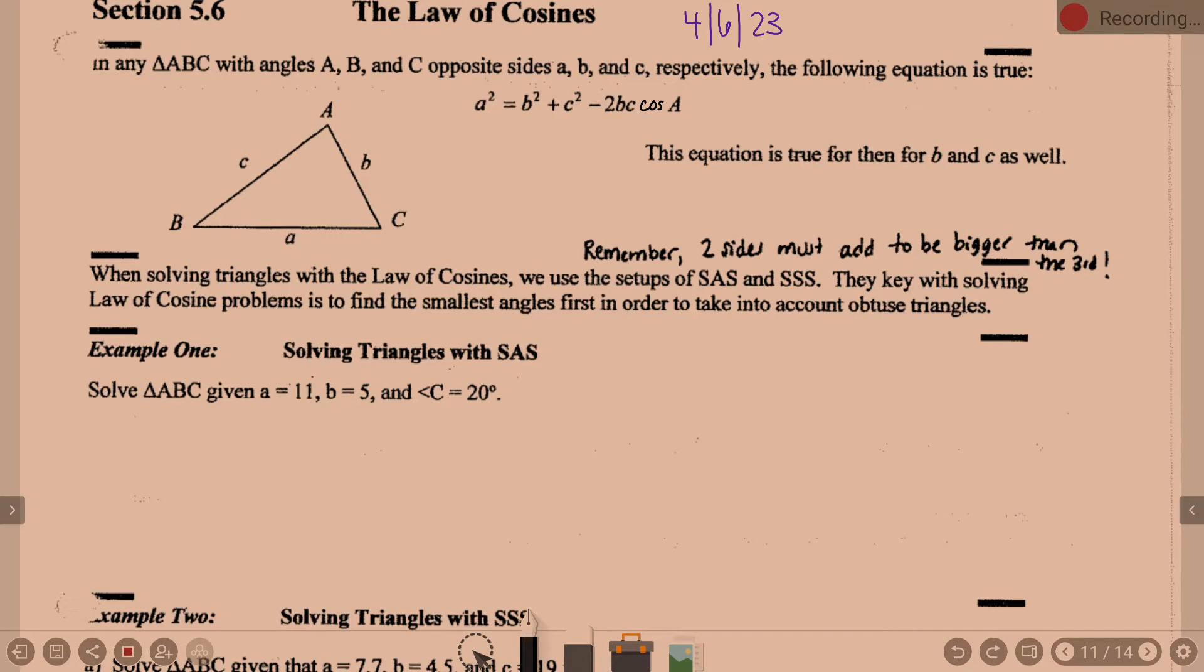Guys, lesson 5-6 introduces us to law of cosines. When we talk about law of cosines, we still have our angle ABC, our sides ABC, and we have a totally different equation.